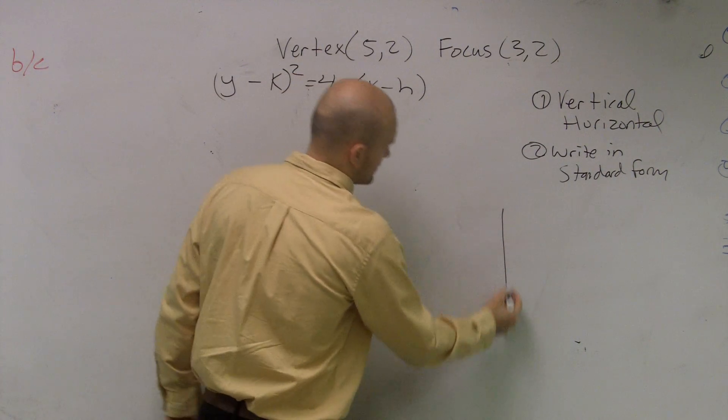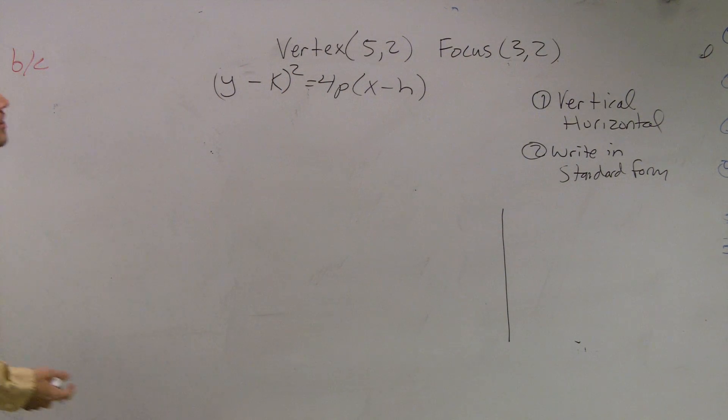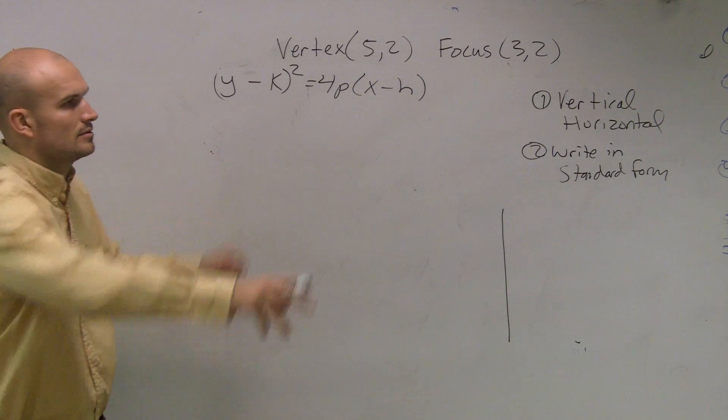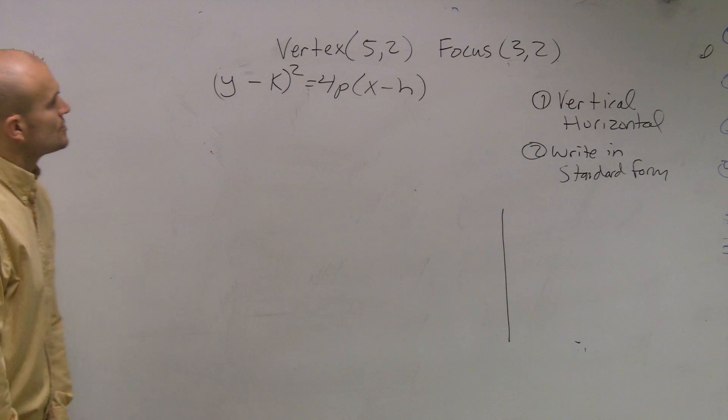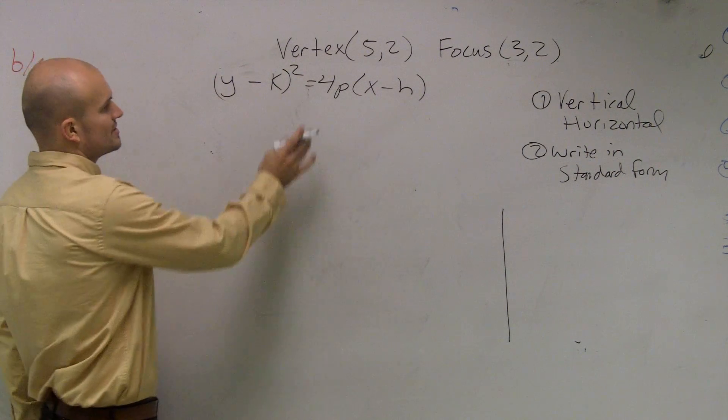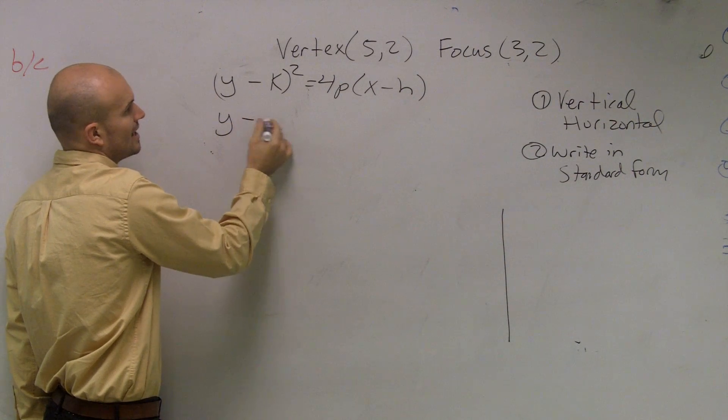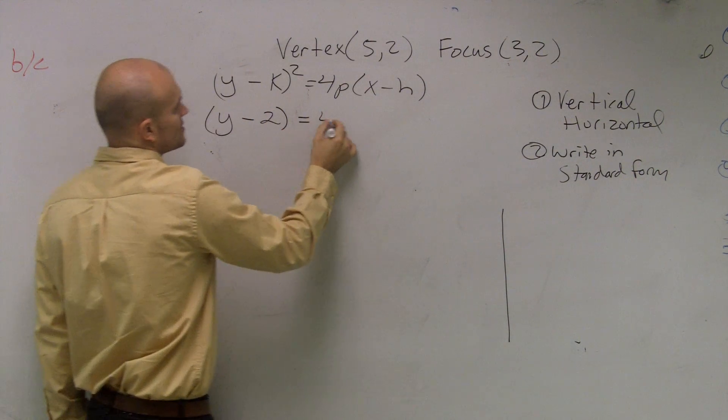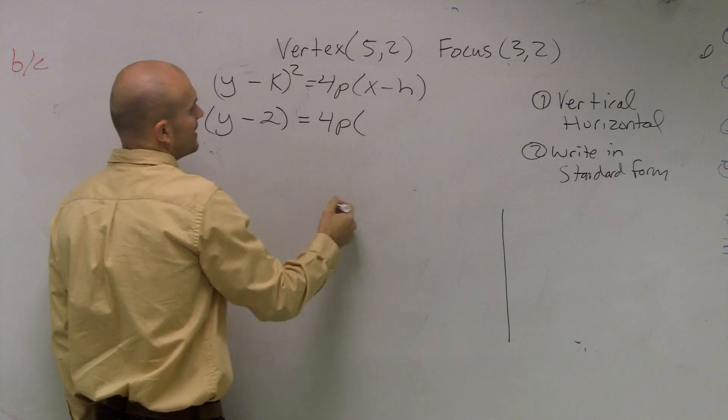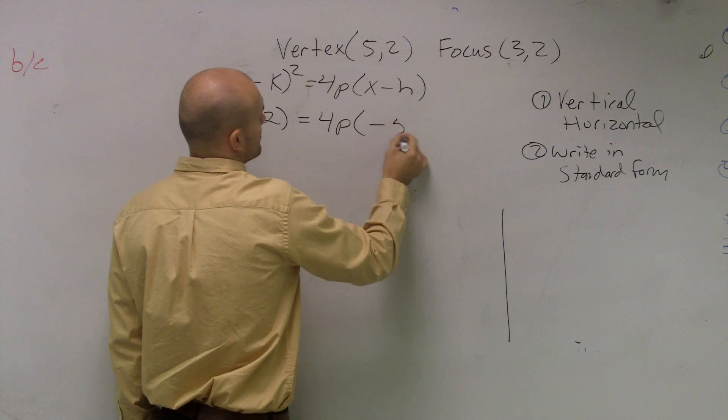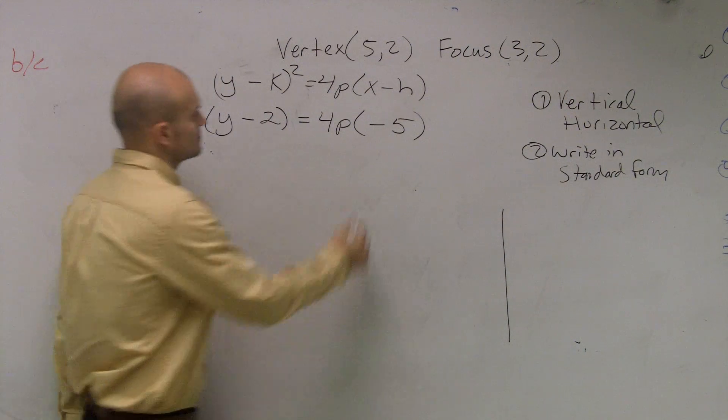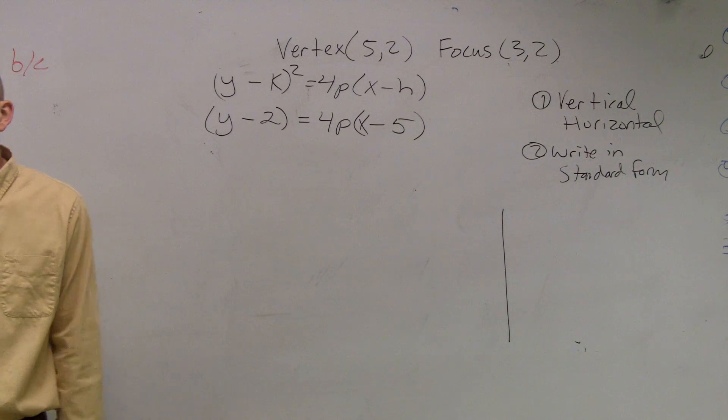I should probably go back to here. So one thing we notice is our vertex. So we can plug in our vertex, right? So our vertex is going to be 5 comma 2. So when you take your vertex, you can plug that in. x is going to be your 5, so you say y minus 2 squared equals 4 times p, and then x minus 5.